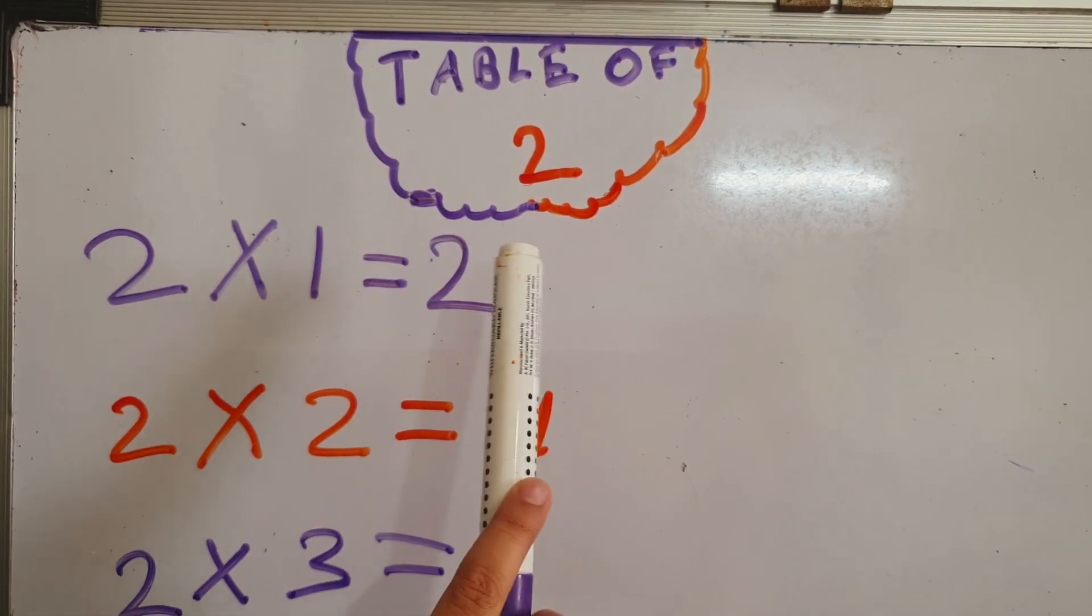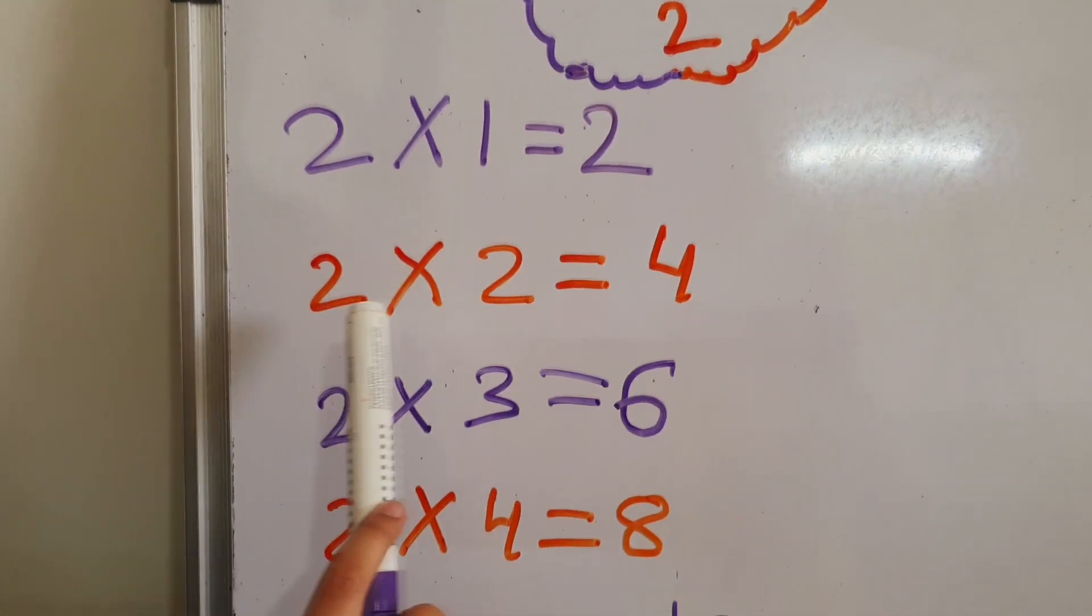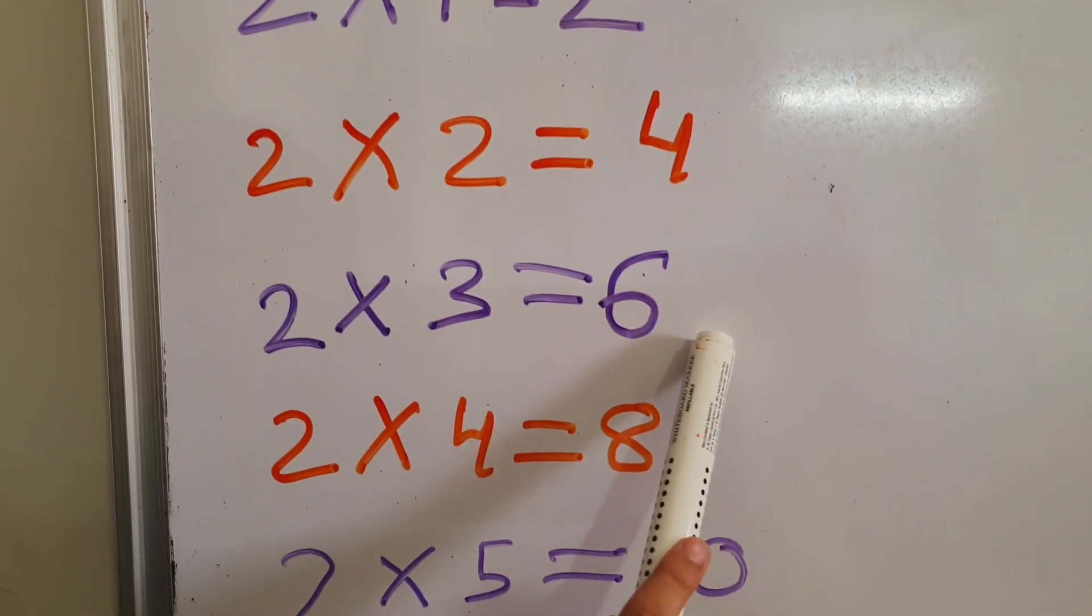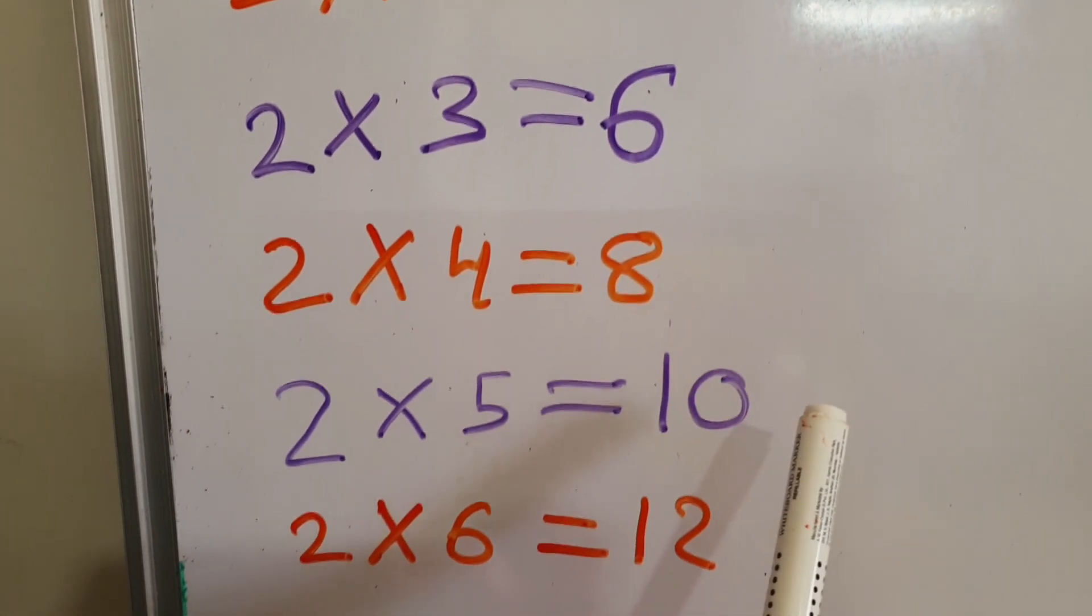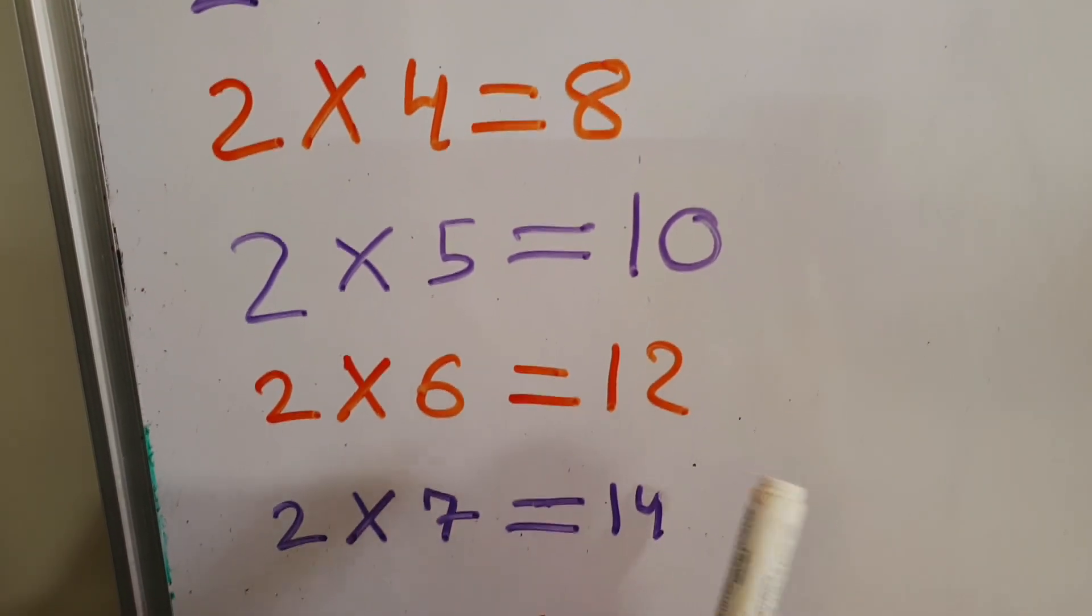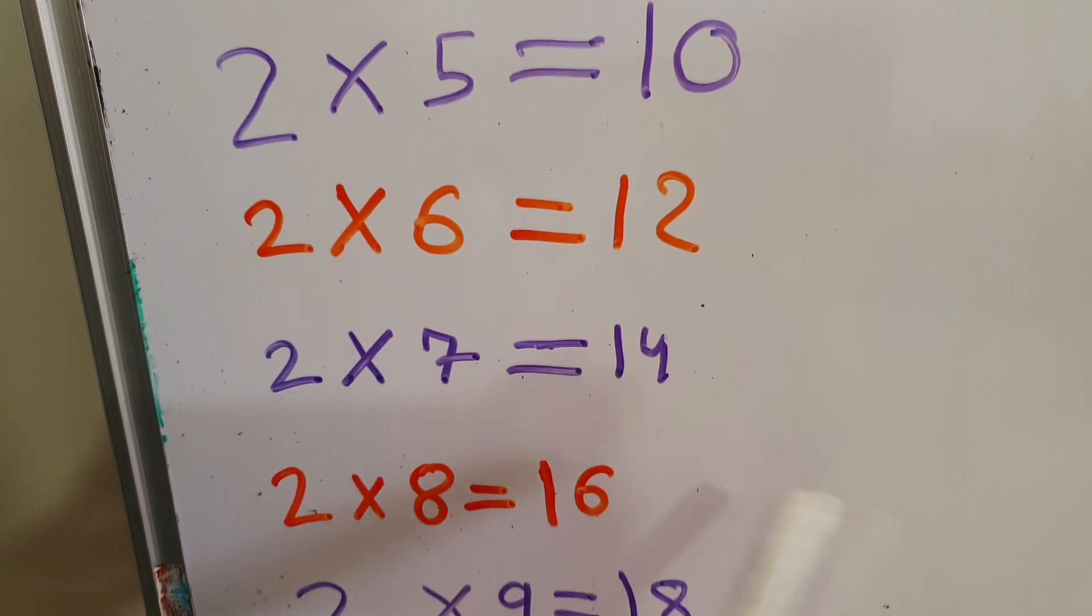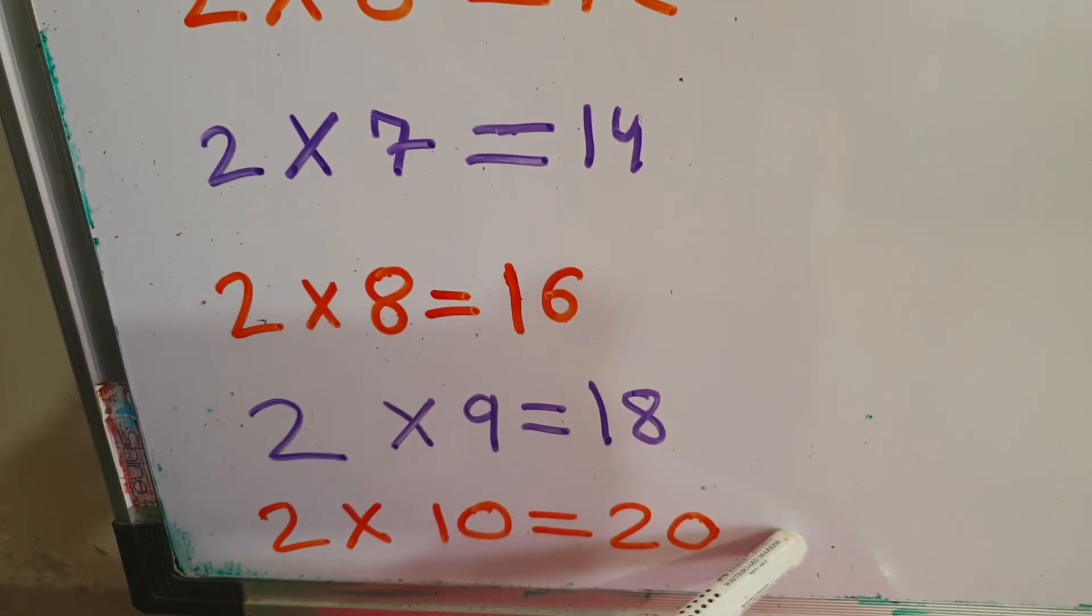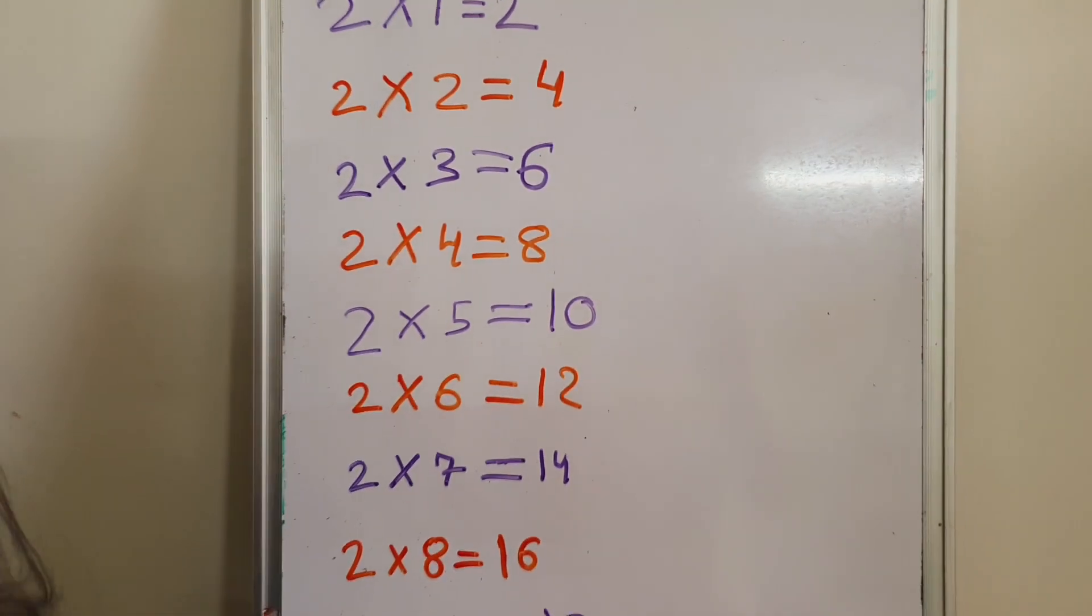The table of two. Two ones are two, two twos are four, two threes are six, two fours are eight, two fives are ten, two six are twelve, two sevens are fourteen, two eights are sixteen, two nines are eighteen, two tenths are twenty. Now we are going to do it again.